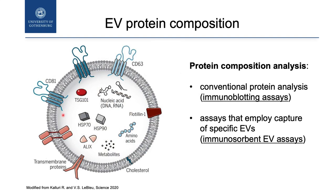We have a typical cartoon of an extracellular vesicle with a lot of proteins inside the vesicles but also on the membrane. What we can investigate, obviously, is the protein cargo of the vesicles and we have several ways to do this. The easiest way is to do the immunoblot — the western blot. And we also have the immunosorbent EV assays.